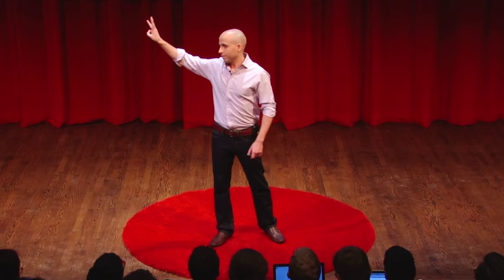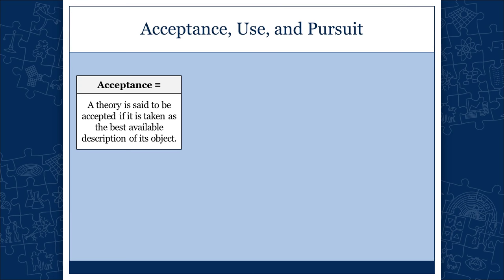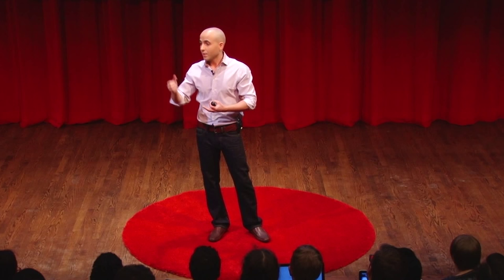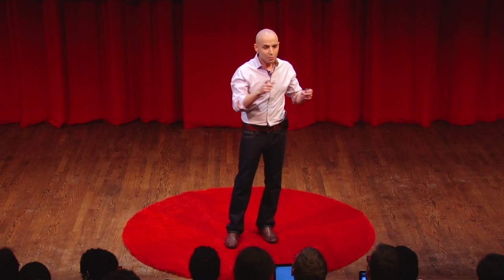Before we get to that, we have to clarify what acceptance is. I'm going to give you three definitions. The first one is acceptance: a theory is said to be accepted if it is considered the best available description of its object. The object could be something physical — a fallen apple or a revolving planet — something social like a group of people or social institutions like government, or something formal like a number or a logical relation. A theory is accepted if we believe it is the best available description of its respective object.